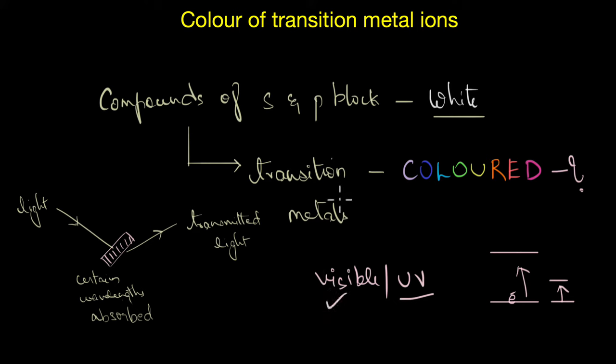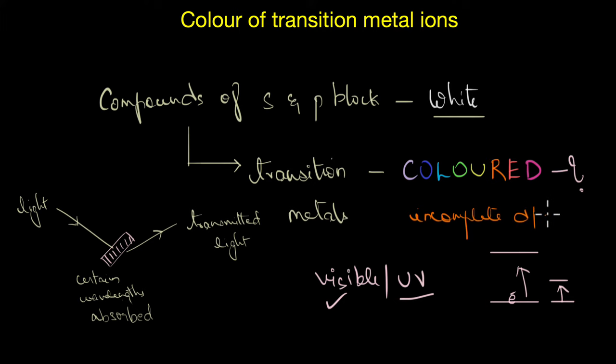Now things take an interesting turn when we talk about ions with incomplete d or f orbitals. You see, an isolated gaseous ion of a transition metal that is free from any external influence has five degenerate d orbitals. That is, all the orbitals here are of same energy.